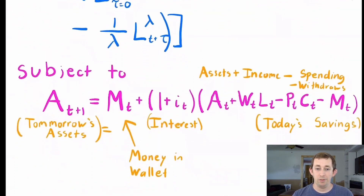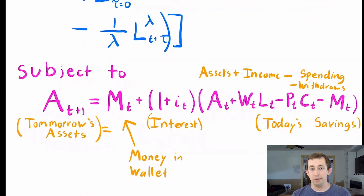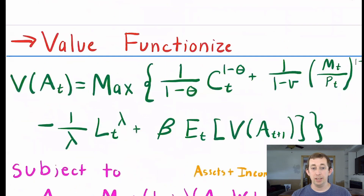The budget constraint for this problem has a lot going on, so let's spend some time to think about it more carefully. What we are saying is that tomorrow's assets are the amount of money I have in my wallet today plus money in the bank times interest. What was in my bank account is the assets I had at the end of yesterday plus the amount earned from working, W_T L_T, minus spending on consumption, P_T C_T, minus the money taken out of my bank account to put into my wallet.